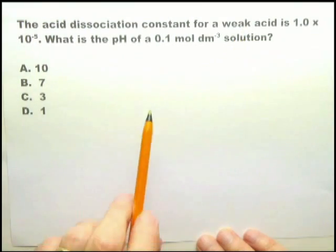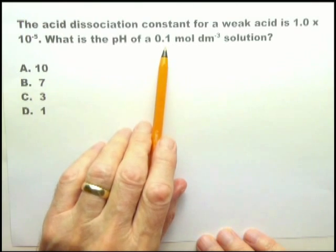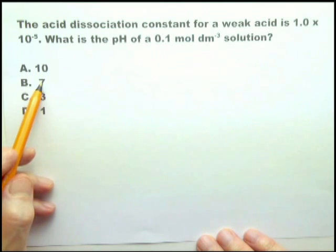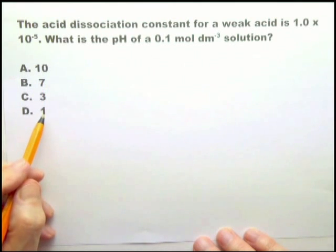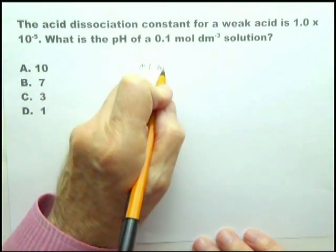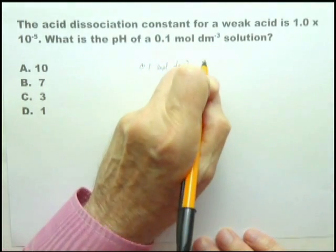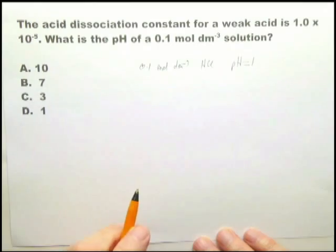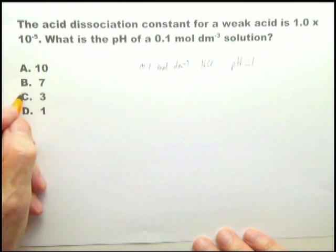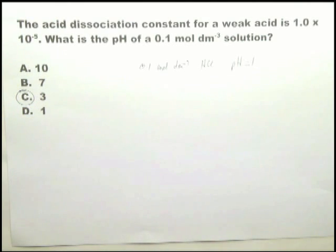They say it's a weak acid. What is the pH of a 0.1 mol solution? You can eliminate pH 10 — it's an acid. You can eliminate pH 7 — it's not going to be neutral. Then you can eliminate pH 1, because that is the pH of a 0.1 mol dm⁻³ solution of strong acid like HCl. They're saying it's not a strong acid; it's a weak acid with an acid dissociation constant of 10⁻³. Therefore the answer is C. You can do that within 10 seconds.